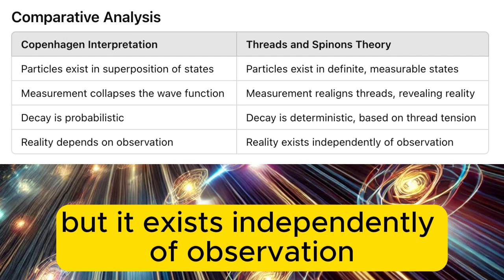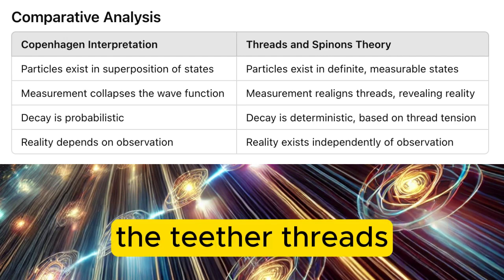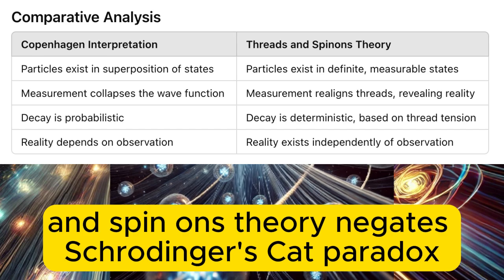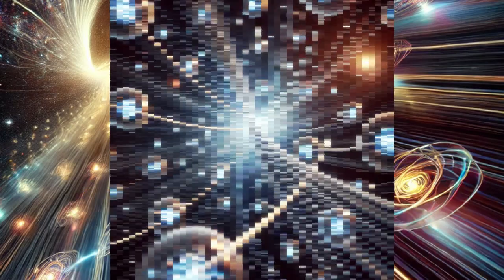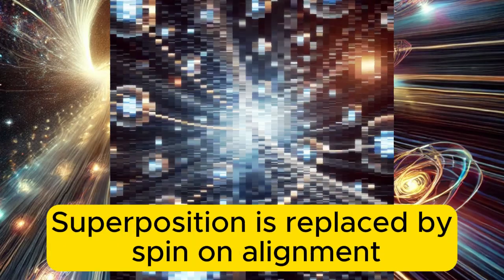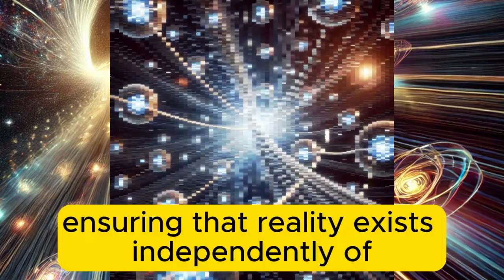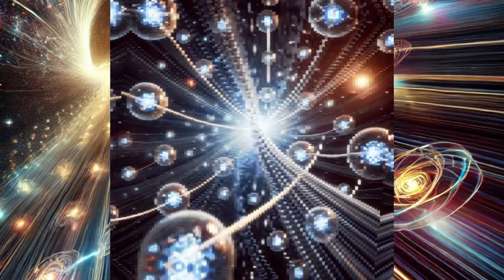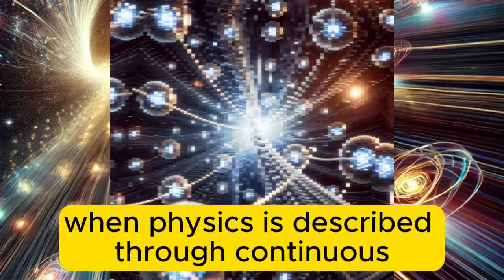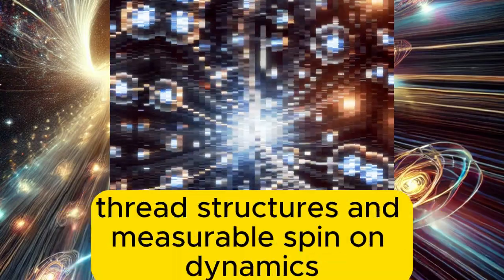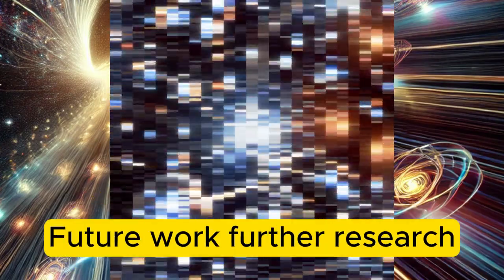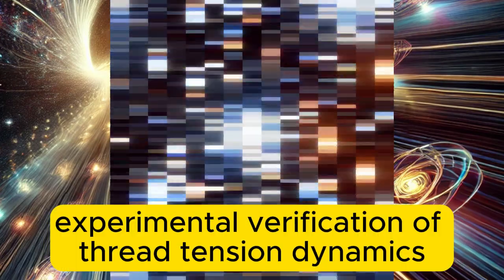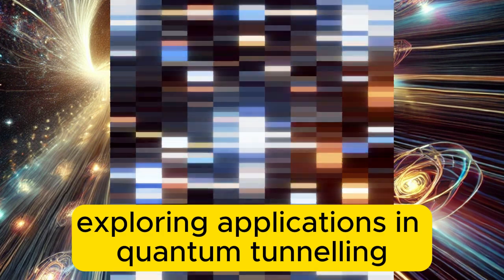In conclusion, the threads and spin-ons theory negates Schrödinger's cat paradox by providing a deterministic, physically grounded explanation for quantum behavior. Superposition is replaced by spin-on alignment and thread tension, ensuring that reality exists independently of observation. The paradox dissolves when physics is described through continuous thread structures and measurable spin-on dynamics rather than probabilistic abstractions.